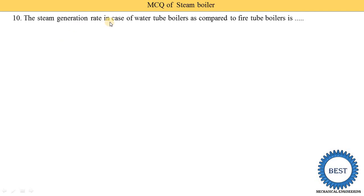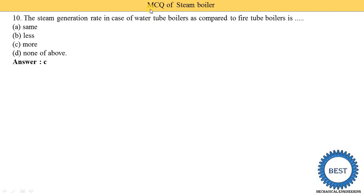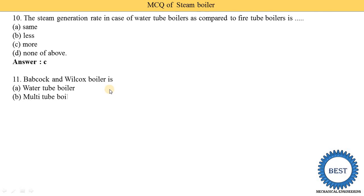The steam generation rate in a water tube boiler compared to a fire tube boiler is: same, less, more, or none of the above. The answer is 'more' — steam generation rate in a water tube boiler is more compared to a fire tube boiler. The Babcock and Wilcox boiler is a water tube boiler, multi-tube boiler, and natural circulation boiler — so option D, all of the above, is correct.